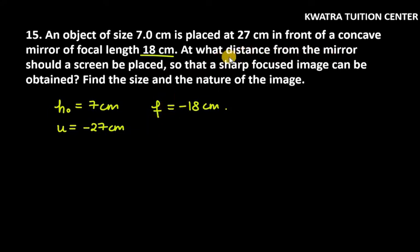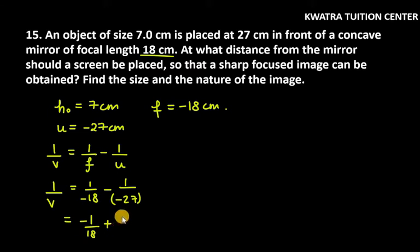We have to find distance from the mirror should a screen be placed so that a sharp focused image can be obtained. 1 by v is equal to 1 over f minus 1 over u. 1 over v equals 1 over f. f is minus 18. u is minus 27.